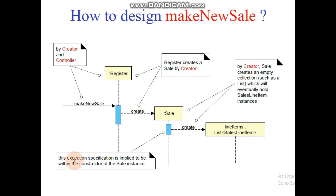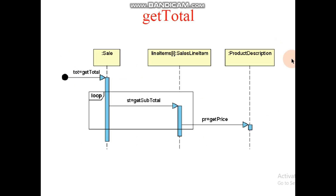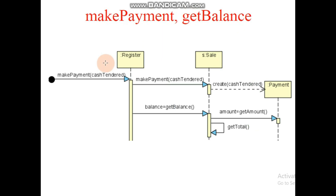This execution specification is implied to be within the constructor of the Sale instance. You can see the enterItem message, further messages, and a list is created. SalesLineItem instances are stored in the list. Similarly, getTotal is a message from the sale, which loops through and gets the price. Then makePayment and getBalance are performed.